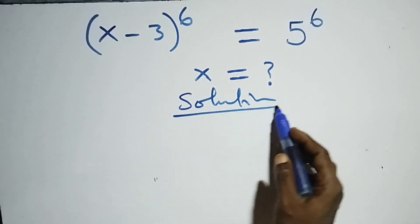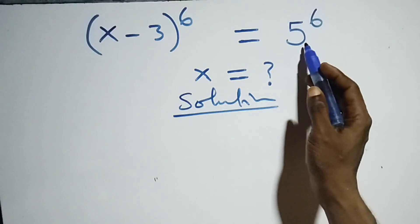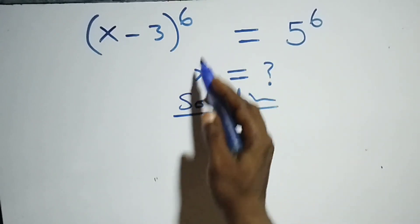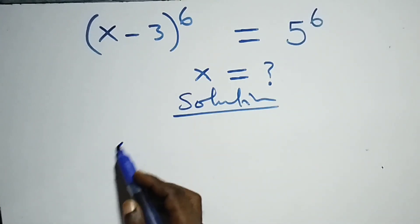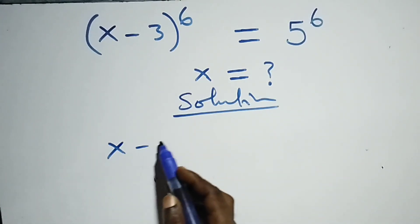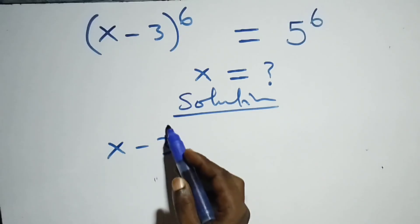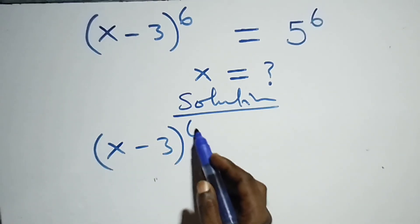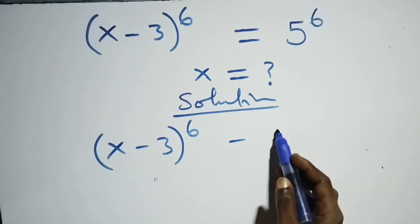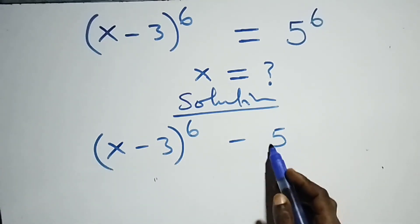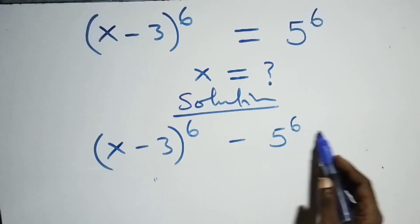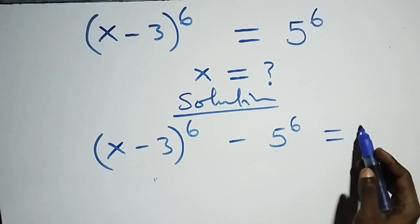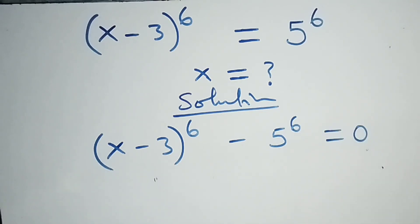From what we have here, we can take 5 raised to power 6 to the left hand side, and we have x minus 3, times 4 raised to power 6, minus 5 raised to power 6, then equals to zero.